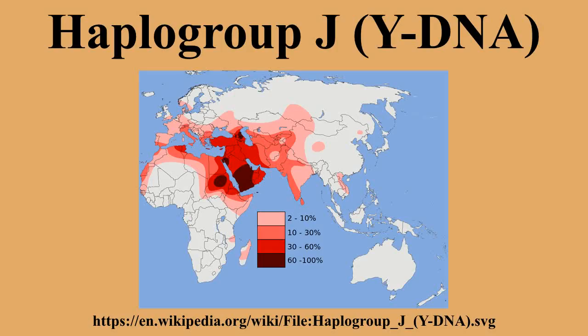The following gives a summary of studies which specifically tested for JM267 and JM172, showing distribution in Europe, North Africa, the Middle East, and Central Asia. Haplogroup JM267, defined by the M267 SNP, is in modern times most frequent in the Arabian Peninsula — Yemen, Saudi Arabia, Qatar, and Dagestan.